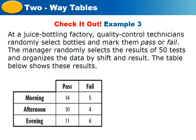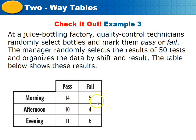At a juice bottling factory, quality control technicians randomly test bottles and mark them pass or fail. A manager randomly selects 50 test results and organizes them by shift and result. Divide all numbers by 50: 14, 10, 11, 5, 4, and 6 each divided by 50, giving us the joint relative frequency table.